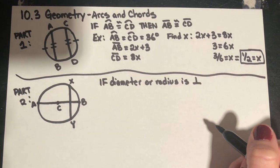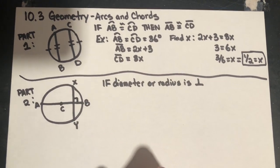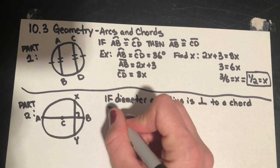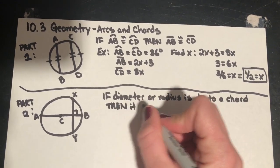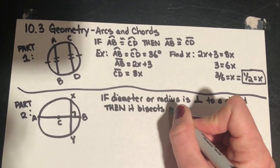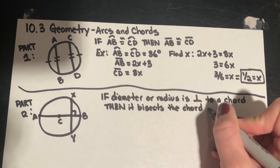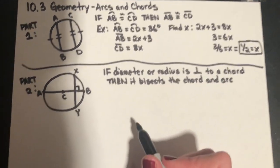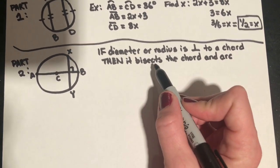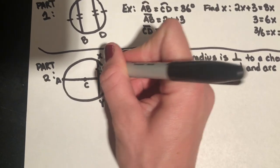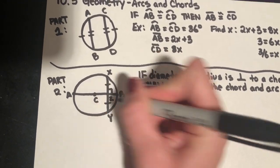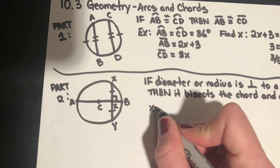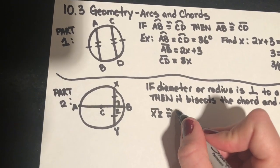Here's our next theorem: if a diameter or radius is perpendicular — meaning a 90-degree angle — to a chord, then it bisects it. We remember that 'bisects' means to cut in half. If it bisects the chord, those two halves are equal. Let's label the midpoint Z, so XZ is congruent to ZY.